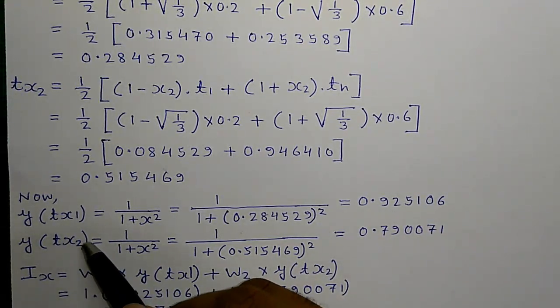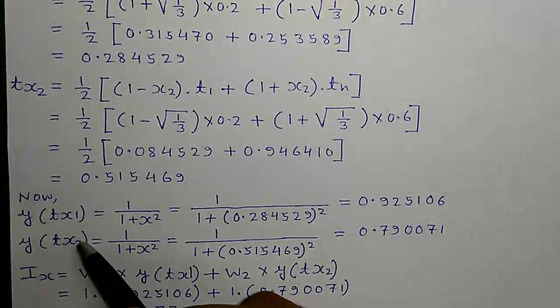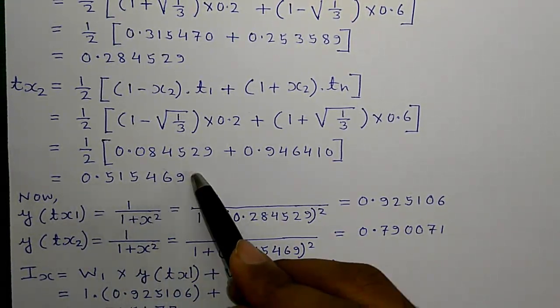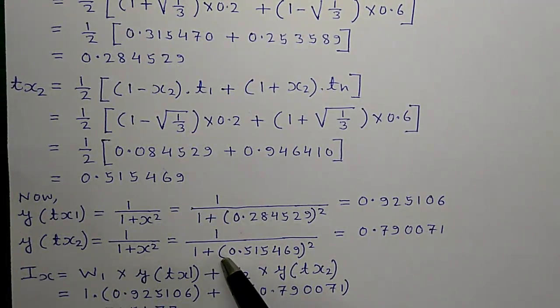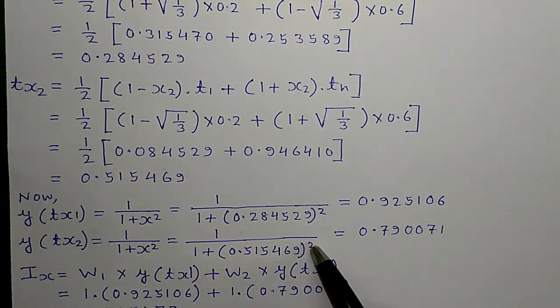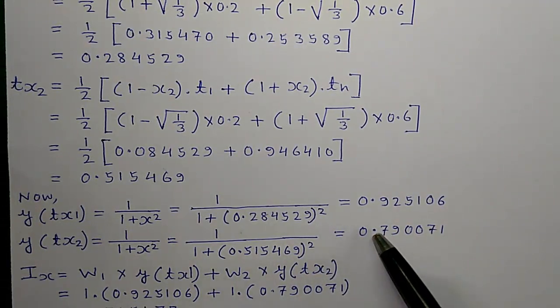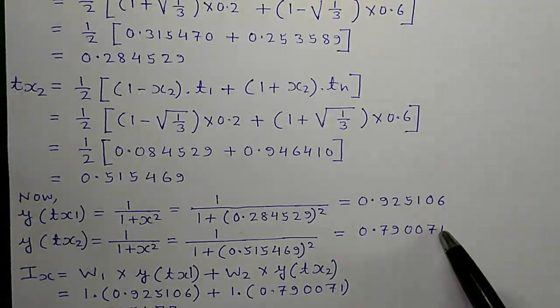Similarly, y of Tx2 will be same expression but we will put the value of Tx2 that is this value in place of x here. That is equal to 1 divided by 1 plus 0.515469 square. That is equal to 0.790071.